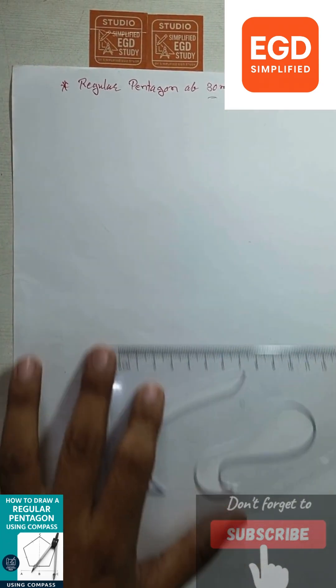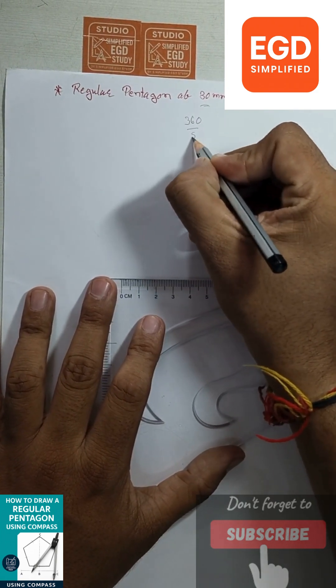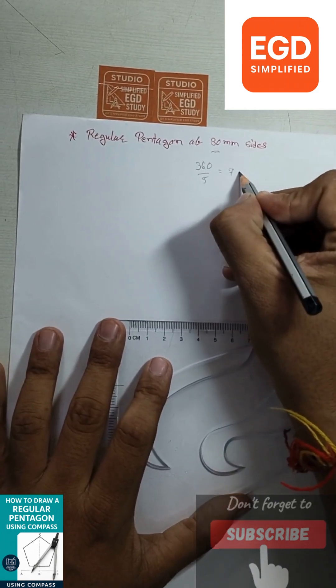Regular pentagon of 30 mm side. To draw a pentagon, pentagon has 5 sides. So 360 divided by 5, that is equal to 72 degrees.